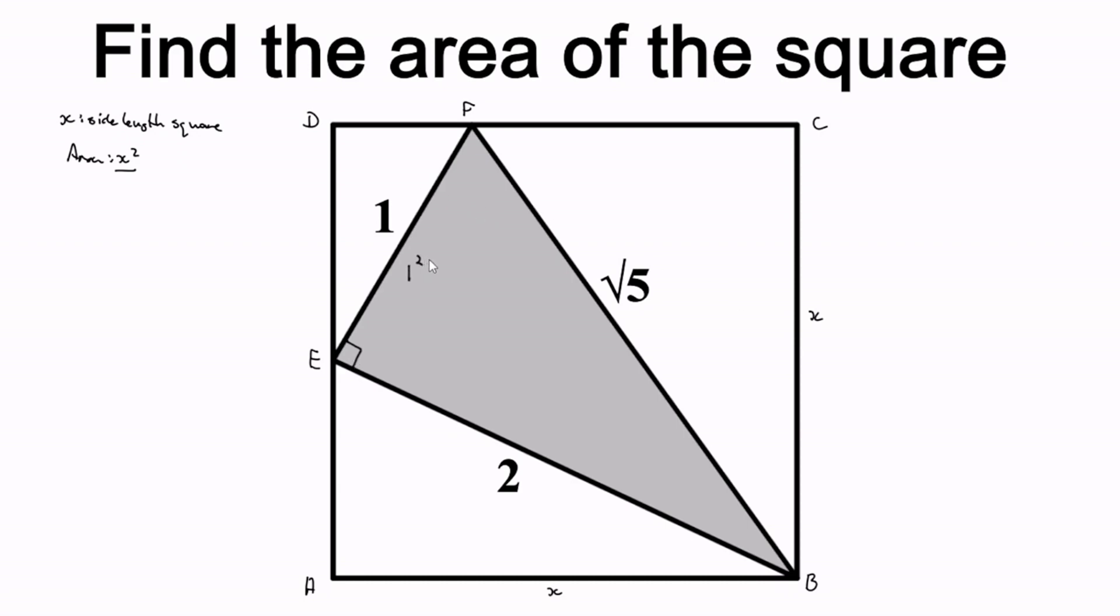So if we recall, the Pythagorean theorem states that the sum of the squares of the legs of a right angle triangle is equal to the square of its hypotenuse. So if this statement is true, then we have confirmed that triangle BEF is in fact a right angle triangle. And this statement is in fact true. So 1 plus 4 equals to 5, and 5 is the square of the square root of 5. So now we have shown that triangle BEF is a right angle triangle.